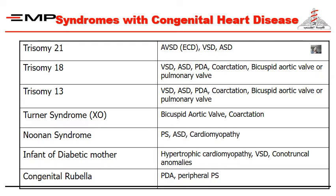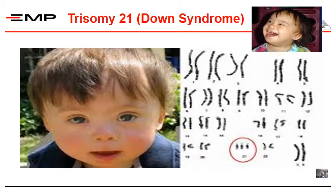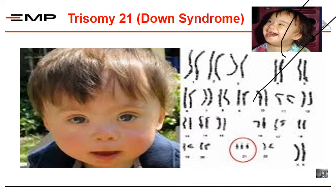These are the syndromes that present with congenital heart disease, and we're going to discuss each one of them. This is trisomy 21, or Down syndrome, in which three copies of chromosome 21 are present. Down syndrome patients tend to look quite alike. This is a picture from the internet and this is one of our patients. These patients most commonly have atrioventricular septal defect, VSDs, or ASDs.